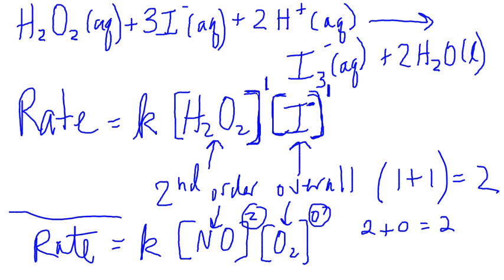The zero here means that this reaction, even though O2 is a reactant, it's independent of that reactant's concentration, because the exponent is a zero.